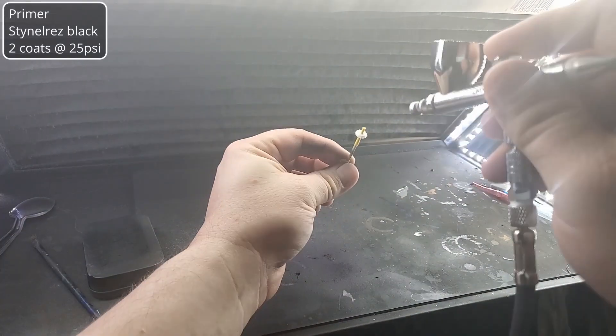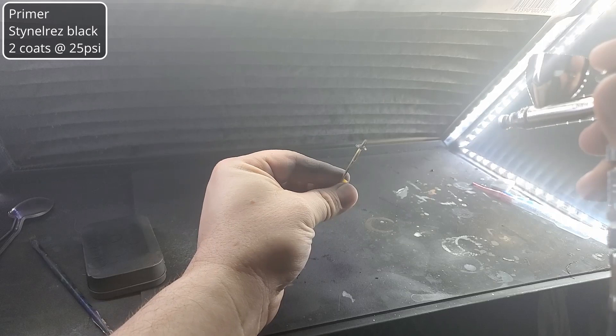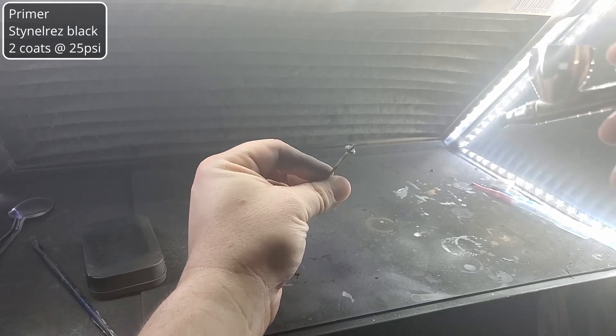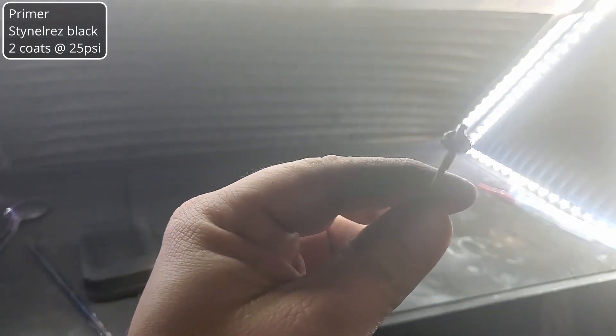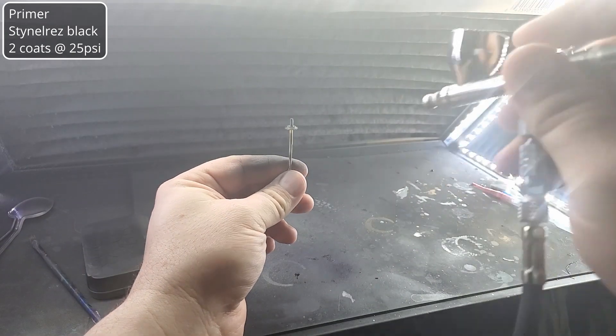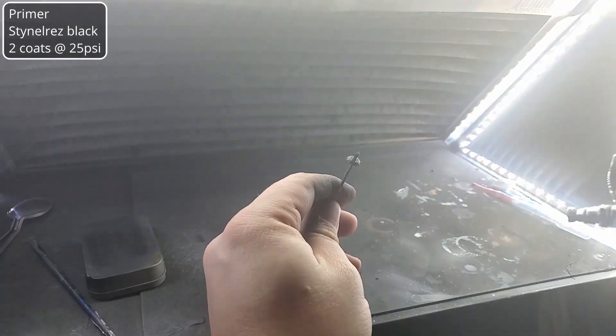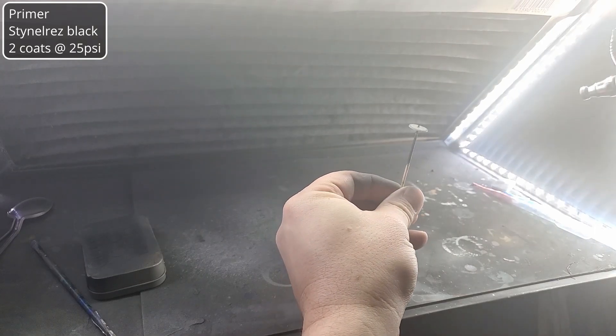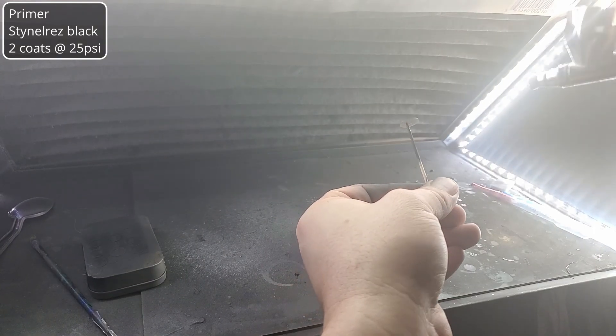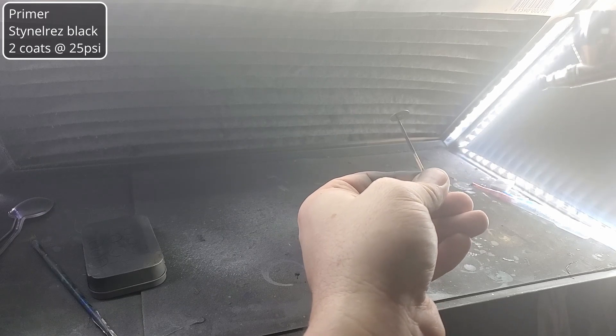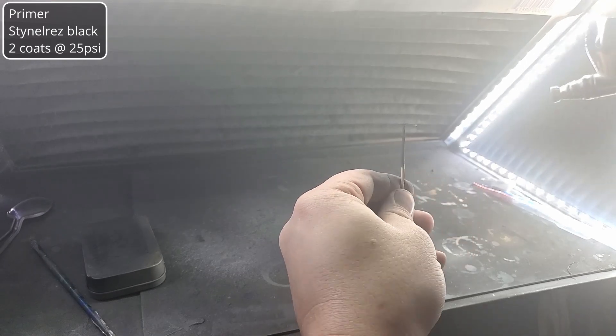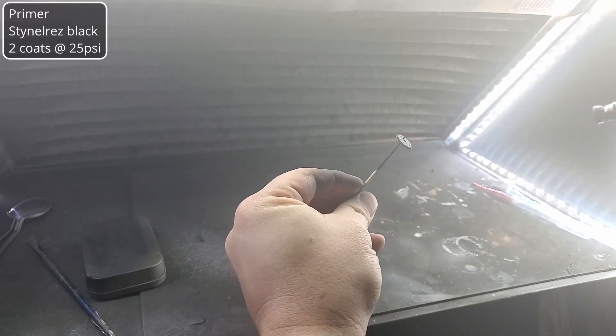All the resin parts are going to get two coats of black Stynelrez primer sprayed at 25 psi through my UMP Apex airbrush with the 0.35 millimeter needle. A lacquer primer would etch into the resin and grip better but I don't have any black lacquer primer right now and using a black primer lets me skip straight to metallic paint without spraying a black base coat first. Having a black base really makes metallics pop better.